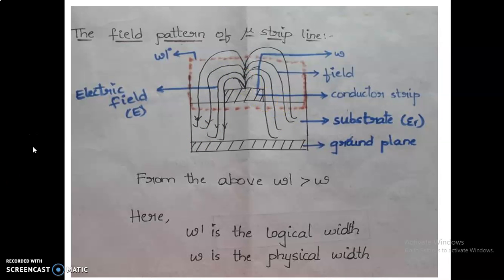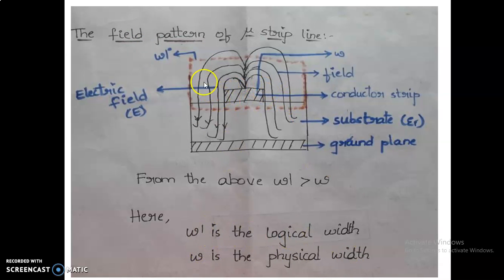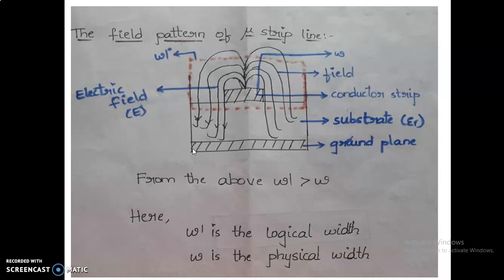One of the best advantages is to observe here: w is the physical width and w-dash is the logical width. If you see any object from nearby it has a physical size, but if you see it from far away it looks bigger. Similarly, if you design a certain width, from the outside it will appear larger.